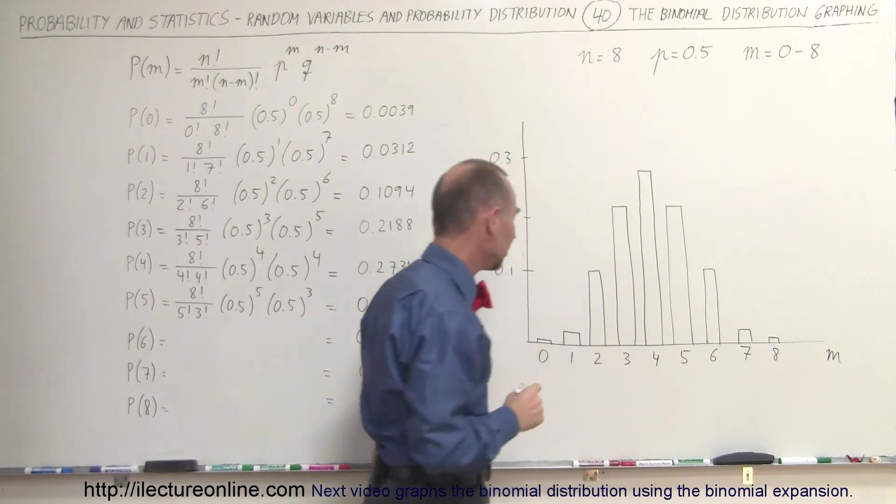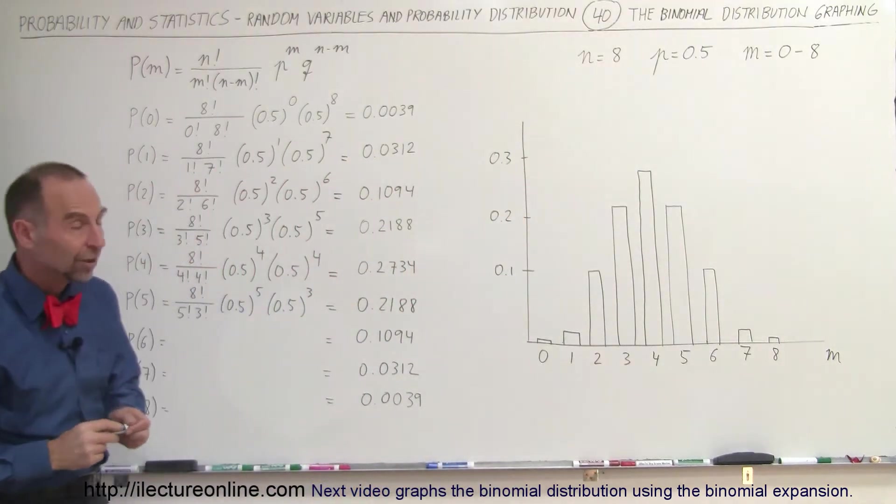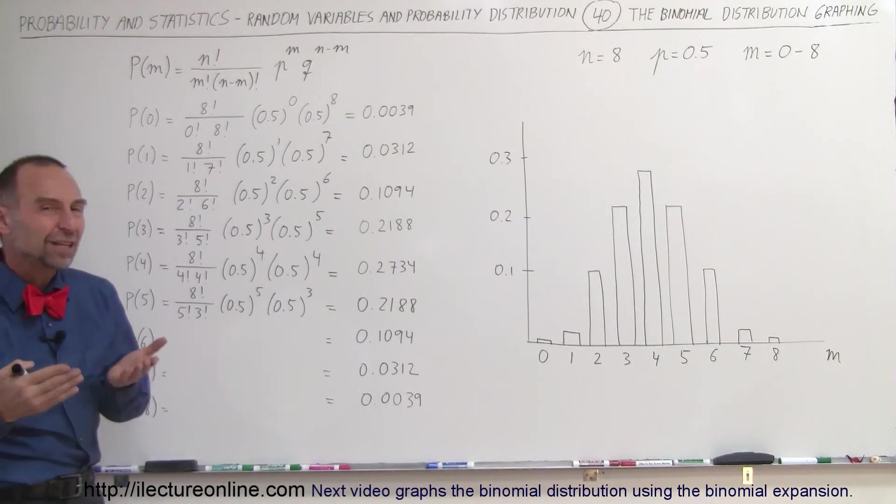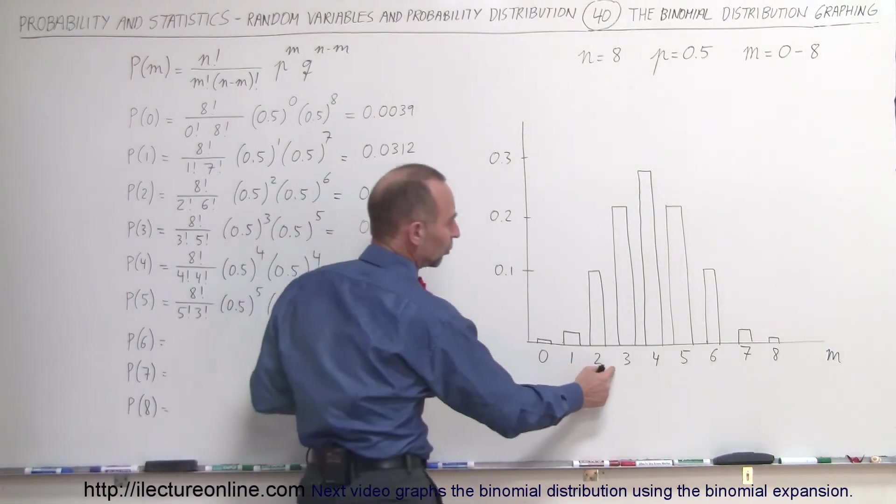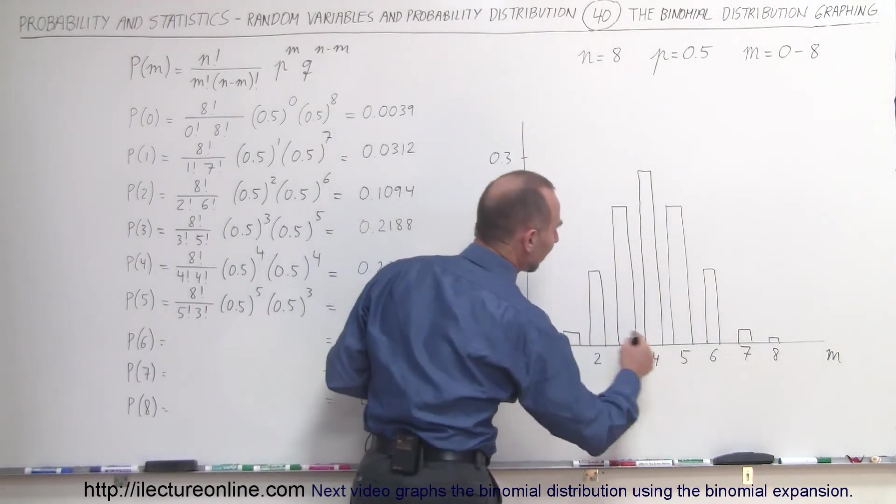There you go. Let me get out of your way so you can see what I just did. So that is the probability for each of the successes from 0 to 1 to 2, 3, 4, 5, 6, 7, and 8.